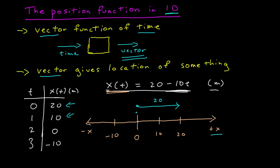At t equals 1 I have a vector of magnitude 10 pointing in the positive x-axis. At 2 I have the zero vector, no magnitude at all. And at t equals 3 seconds I have a vector whose magnitude is 10 and it's pointing on the negative x-axis. Remember these are still vectors but in one dimension. The absolute value of the number gives us a magnitude while the sign gives us the direction.